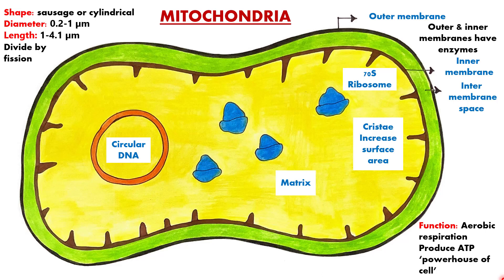First of all, mitochondria, unless specifically stained, are not easily visible under the microscope. So in order to observe mitochondria under the microscope, you have to stain it.